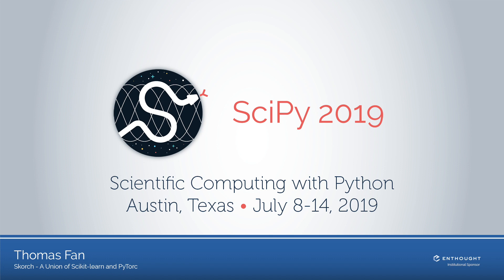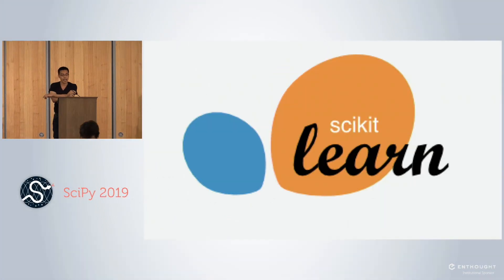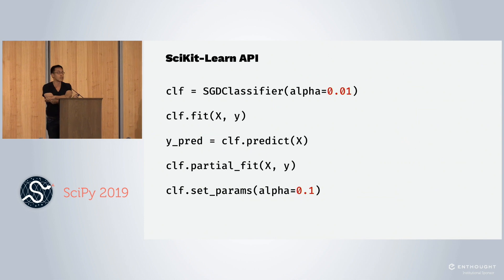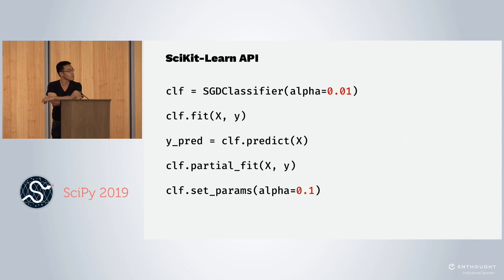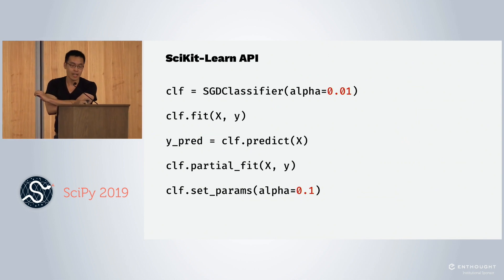Scorch is a union between Scikit-Learn and PyTorch. Scikit-Learn defines a very nice interface for defining machine learning algorithms. You can fit models, predict on them, and it works very nicely.